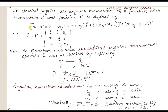In classical physics, the angular momentum of a particle with momentum vector p and position vector r is defined as L = r × p. So how do we define angular momentum in classical physics? It is r × p. Now what is the value of r × p in the form of i, j, k — in x, y, z components? When we remove the cross product, we get some values.